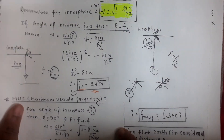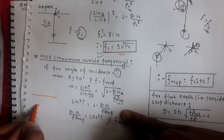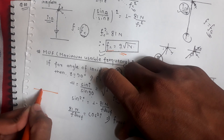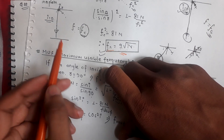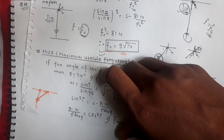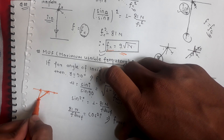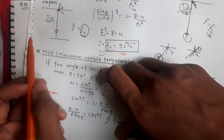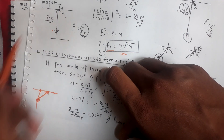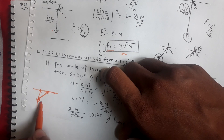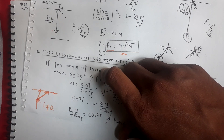For maximum usable frequency — in real life, the wave will not go directly at a perpendicular angle, but will have a certain angle of incidence. For this angle of incidence, FC may be greater, meaning we can use a higher frequency such that the wave still reflects back to the earth. This frequency is the maximum usable frequency. In the case of critical frequency, the angle of incidence is zero degrees; for maximum usable frequency, the angle of incidence I is not equal to zero degrees, but the wave must still return to the earth.